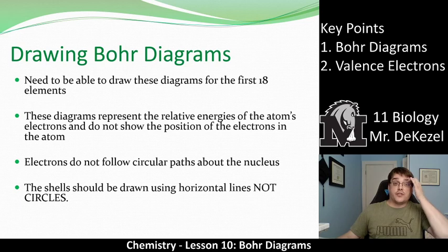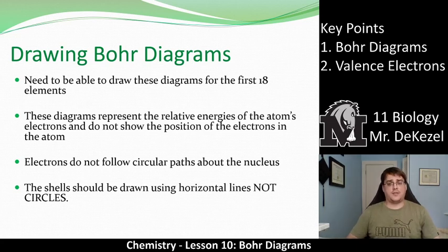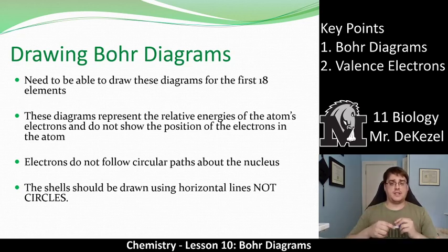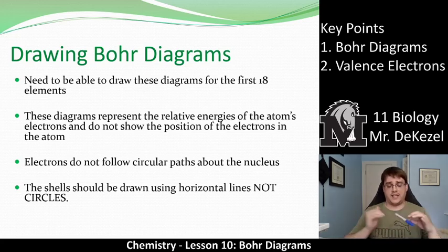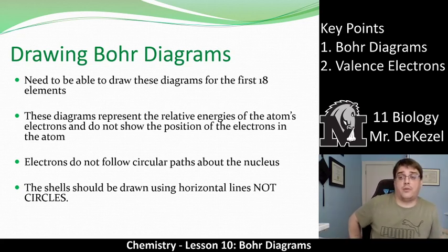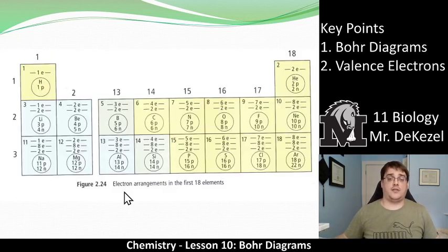We need to be able to draw these for the first 18 elements — numbers one through 18, the first three rows. These diagrams represent the relative energies of the atom's electrons and do not show the exact positions of electrons in the atom. Electrons don't follow circular paths — they fly around the nucleus in random paths. The shells can also be drawn using horizontal lines, which may be easier for some to draw, and either style is acceptable.